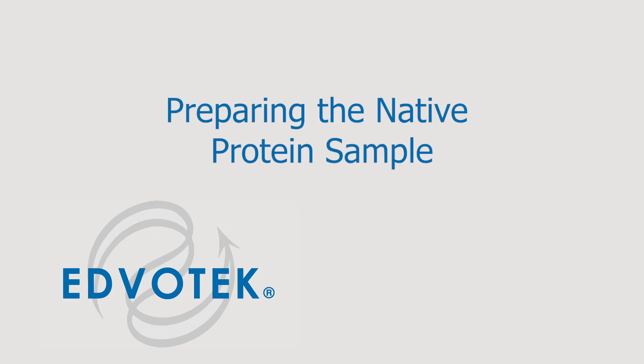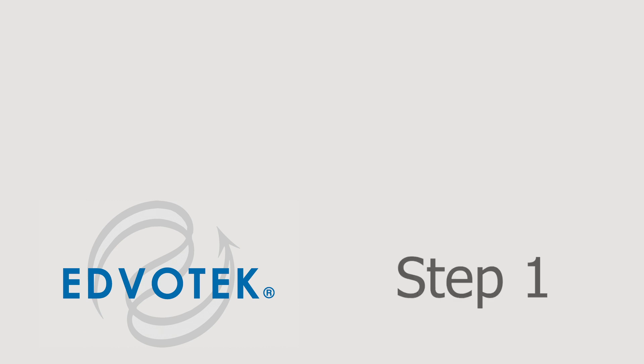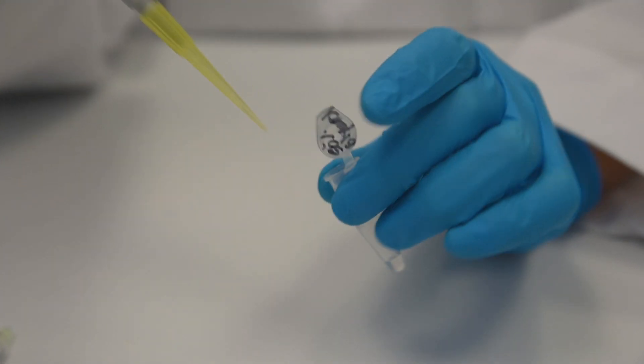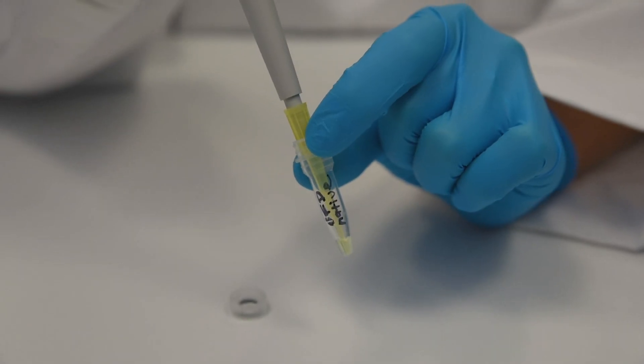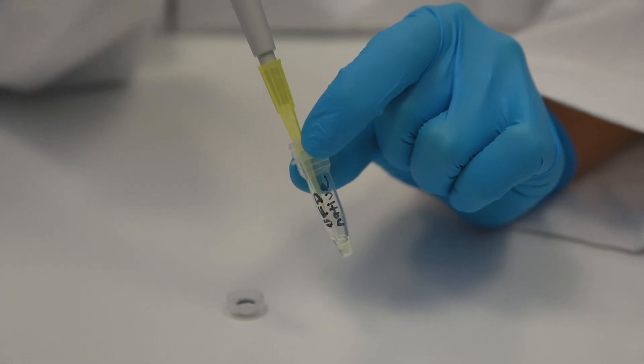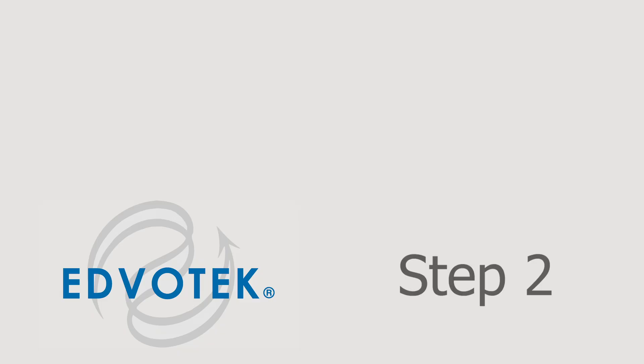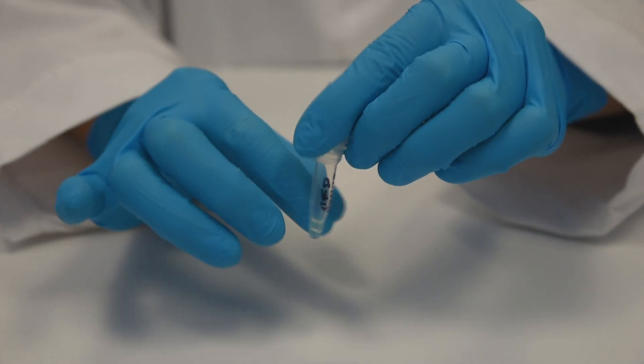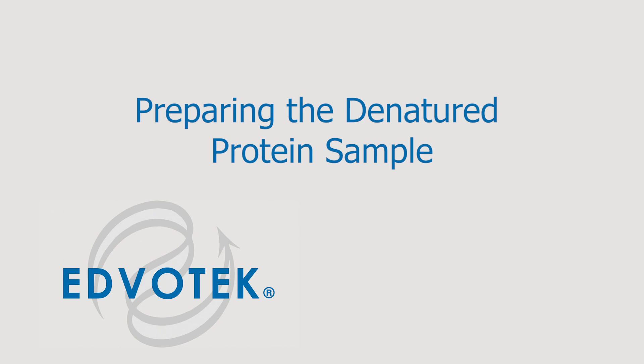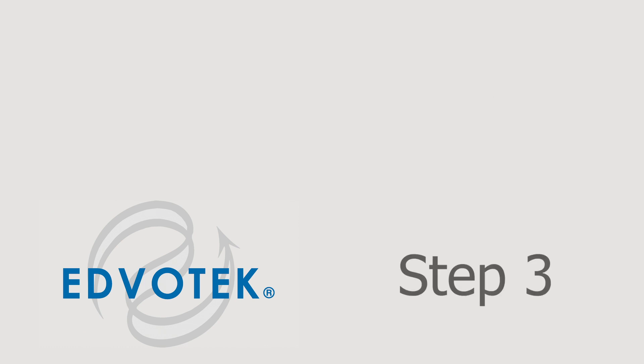Preparing native protein or unboiled sample. Step 1: Add 10 microliters of 50% glycerol to the tube labeled GFP native. Step 2: Mix and set the tube aside for electrophoresis.